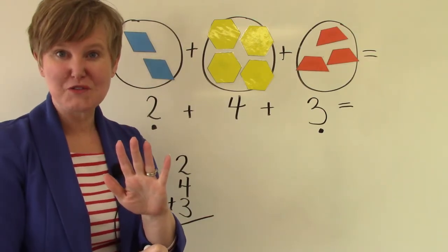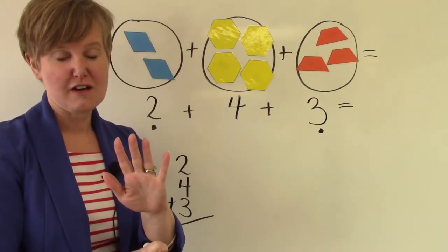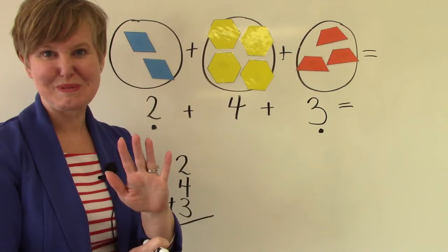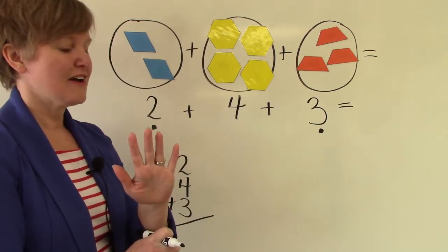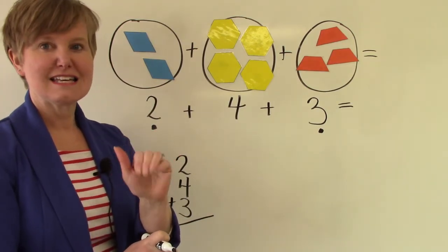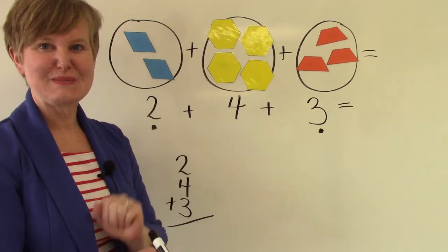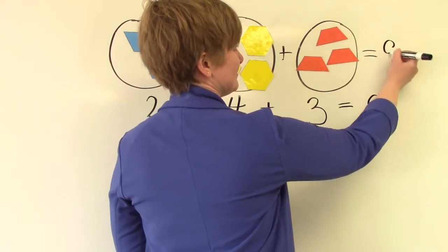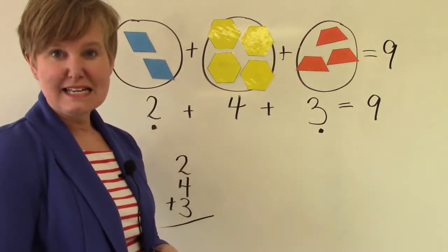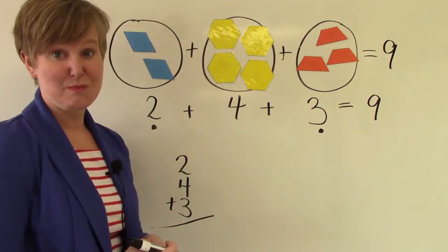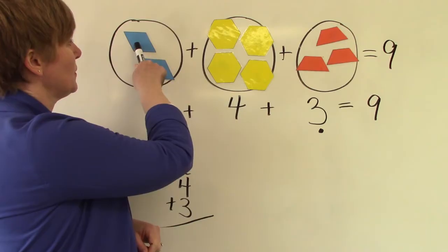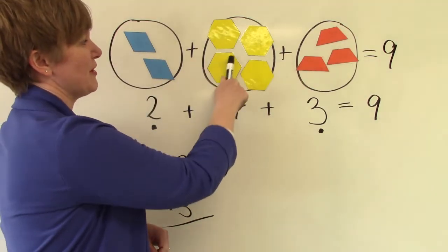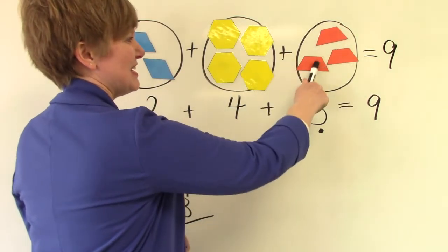And now we're going to add four on to that. Five plus four is also one of our doubles plus one facts. Five, six, seven, eight, nine. I'm going to write down nine here. Let's count our shapes and see if we come up with the same answer. One, two, three, four, five, six, seven, eight, nine.